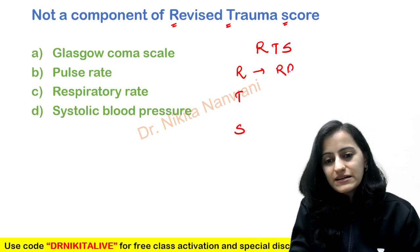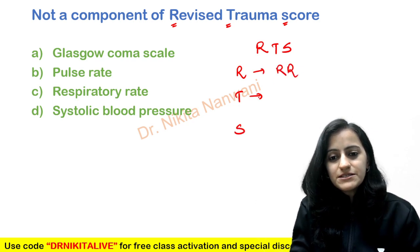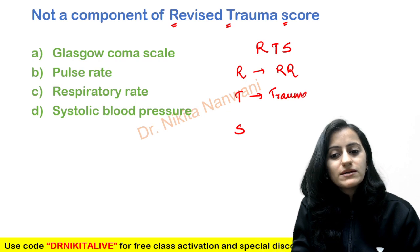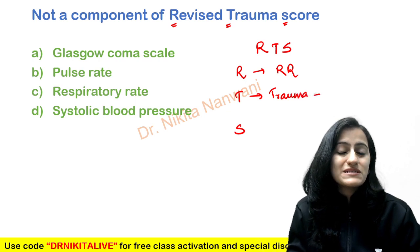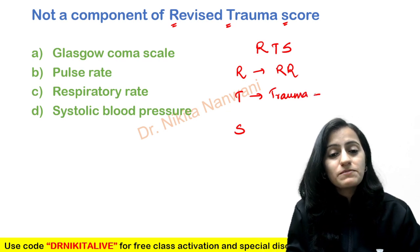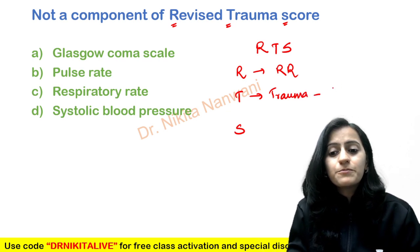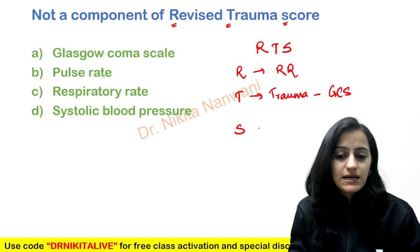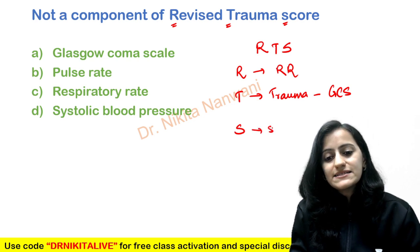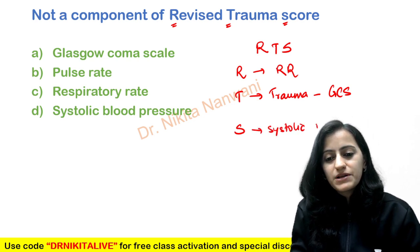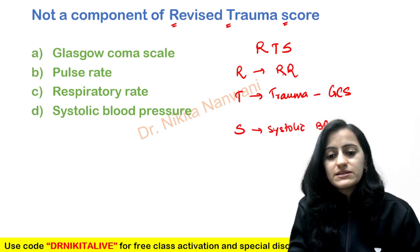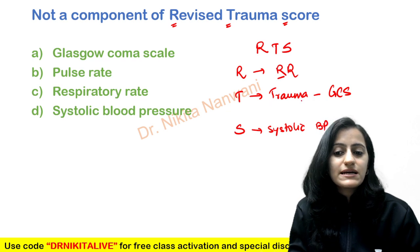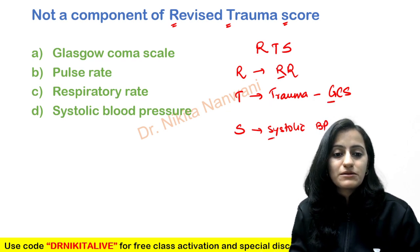R stands for Respiratory Rate. T stands for Trauma — specifically the score we see in all trauma patients, which is the Glasgow Coma Scale (GCS). And S stands for Systolic Blood Pressure. So the three components are Respiratory Rate, GCS, and Systolic Blood Pressure.